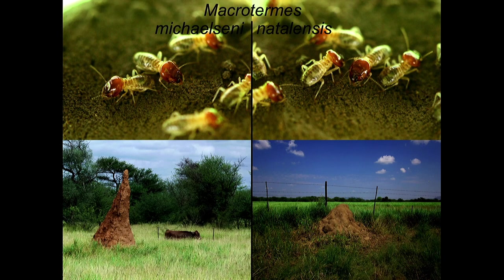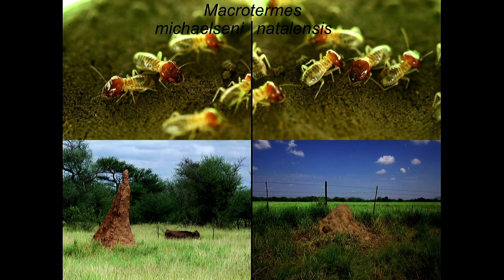Michaelseni build these tall, impressive spires — it's hard to see the scale because of the tall grass, but that's a cow for reference. And Macrotermes natalensis build these low, spireless, uninteresting-looking things. Our hypothesis was we'd study their behavior, identify behavioral differences, and connect differences in individual behavior to differences in what they build.